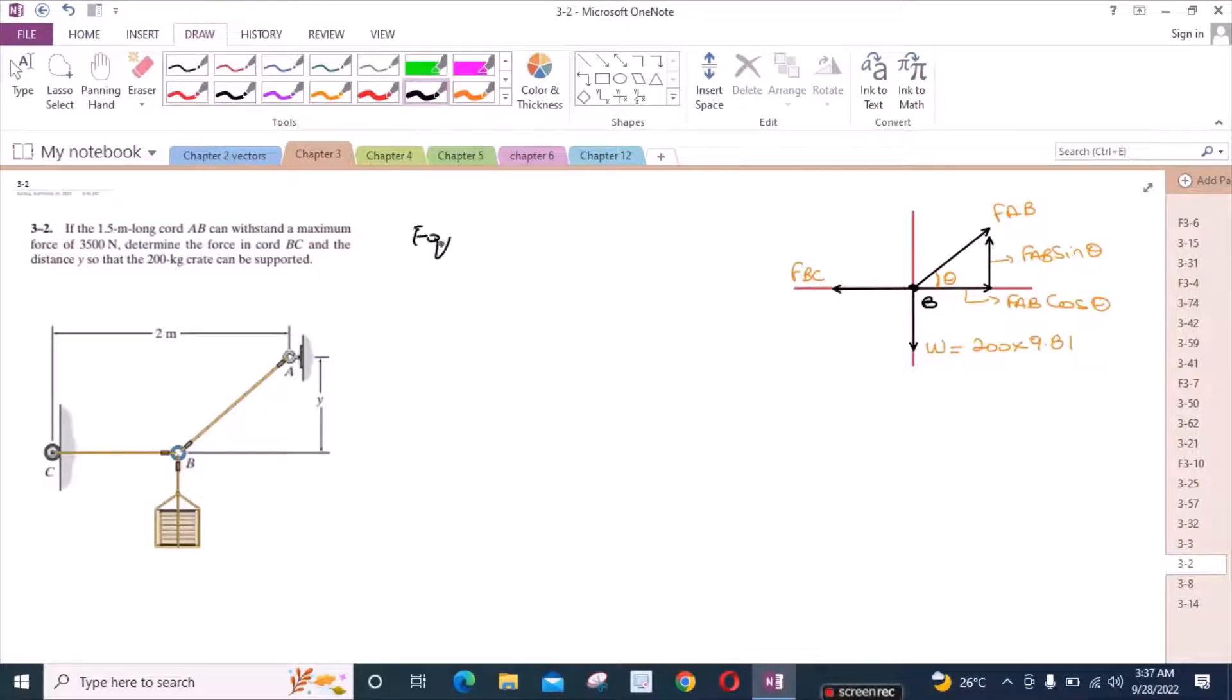Now we have to use the equations of equilibrium. So for the equations of equilibrium, we have sum of the forces in X direction equals to zero. I am considering right hand side as positive. So we have FAB cos theta minus FBC equals to zero. So let's call this equation one.